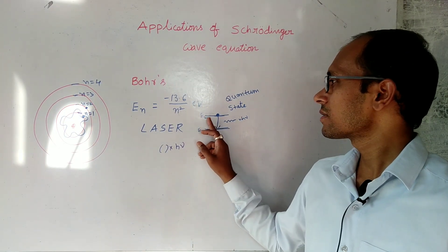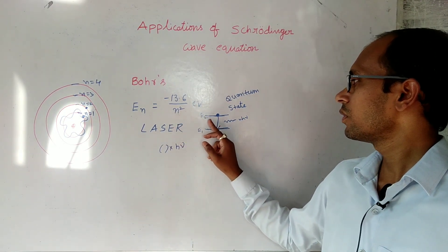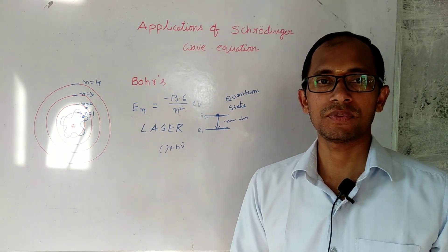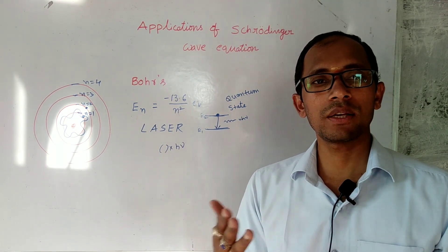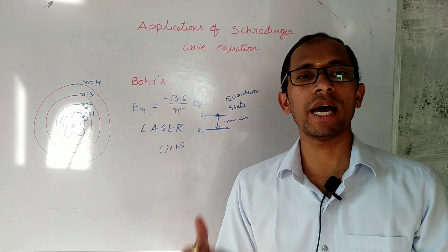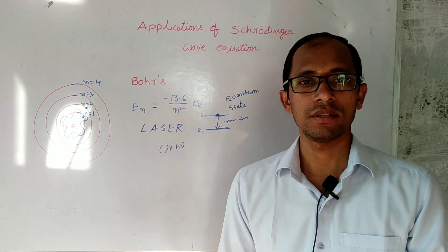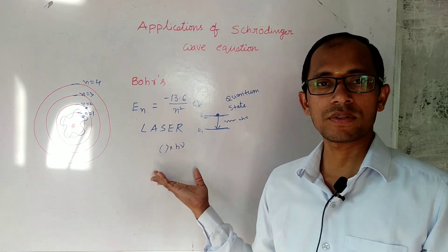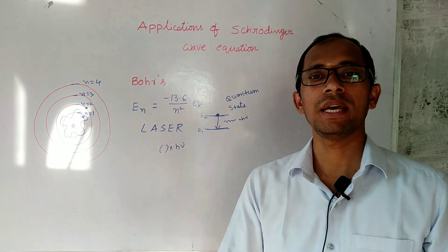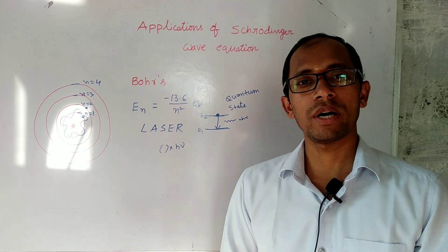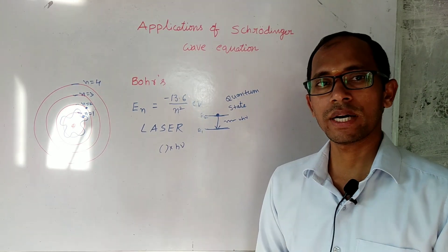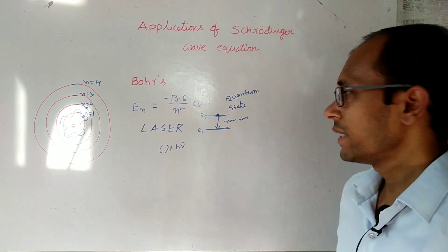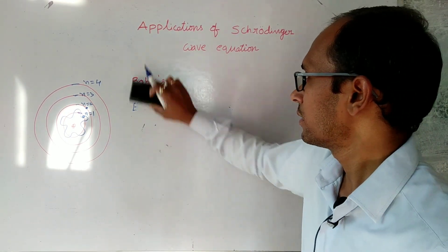So in order to find these energy values, we have to solve the Schrödinger wave equation. Once you solve the Schrödinger wave equation, it gives the energy values of that particle. Once you have the energy values of the particle, the practical situations can be easily explained. This is what is basically required for the application of the Schrödinger wave equation.